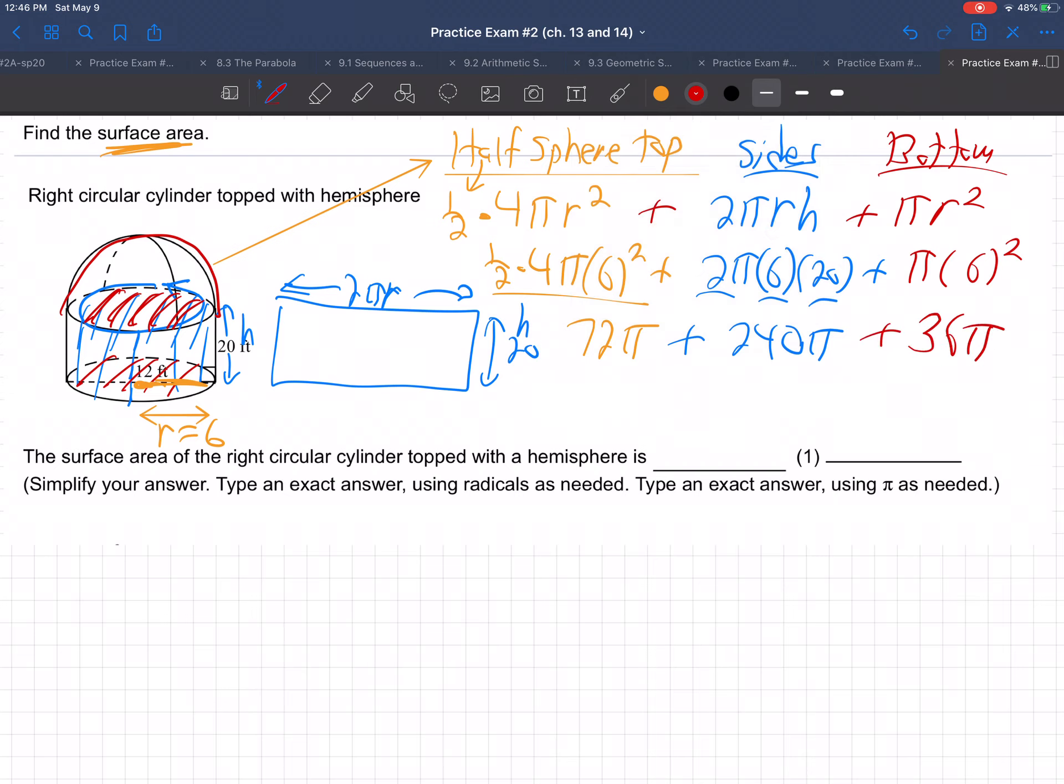And then the last part, this is 36π. So if you add all these up together, I'm going to do that in my calculator right now. 72 plus 240 plus 36. I'm getting 348π. This plus this plus this. 348π in the units. Square feet, because it's area, which is always square units, and we're talking feet on this one.